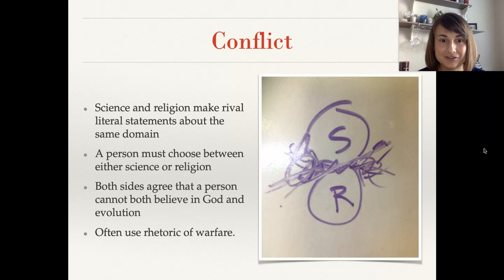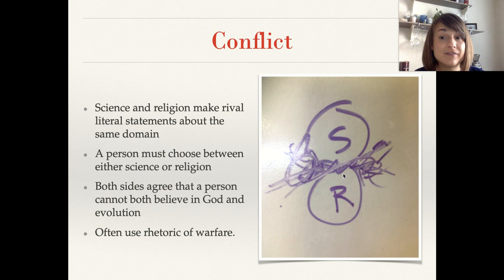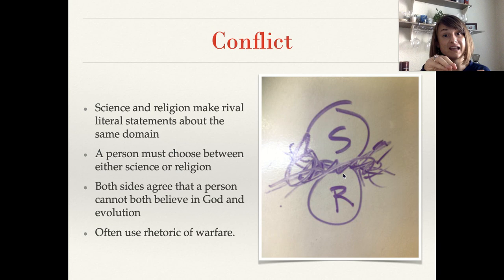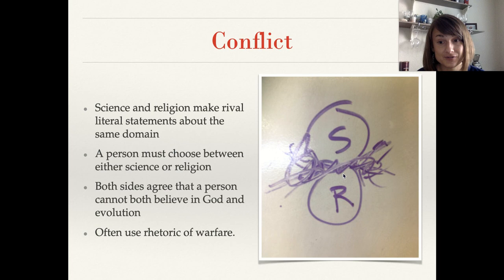Next up, we have the conflict model. You can see my science and religion spheres colliding and in conflict with each other. This is the idea that science and religion are making rival, literal statements about the same domain. Basically, there's a question, science is providing one answer to that question, religion is providing a different answer, and both answers can't both be right. Either one is right or the other, but they can't both be right — they're looking at the same questions and giving different answers.